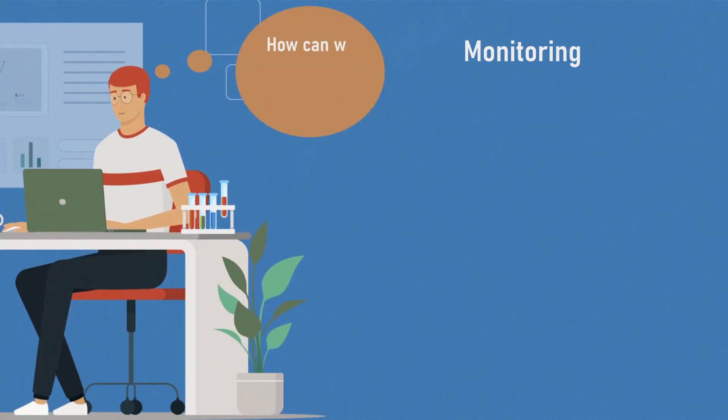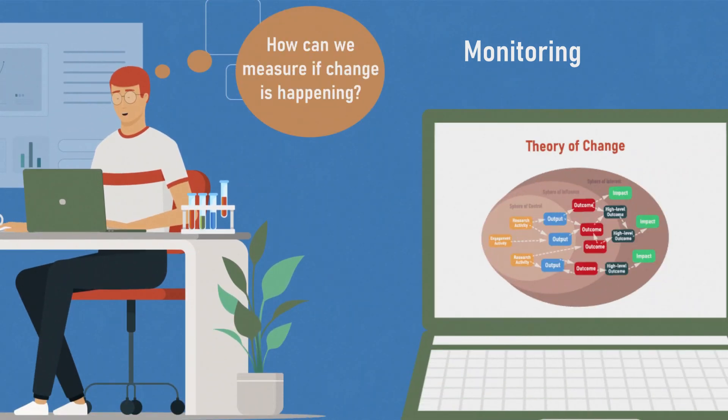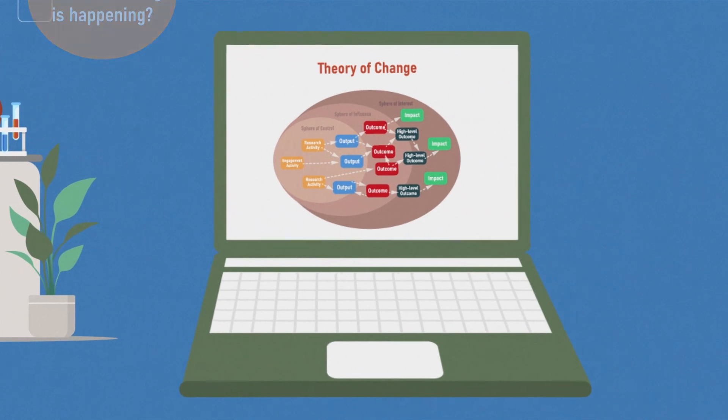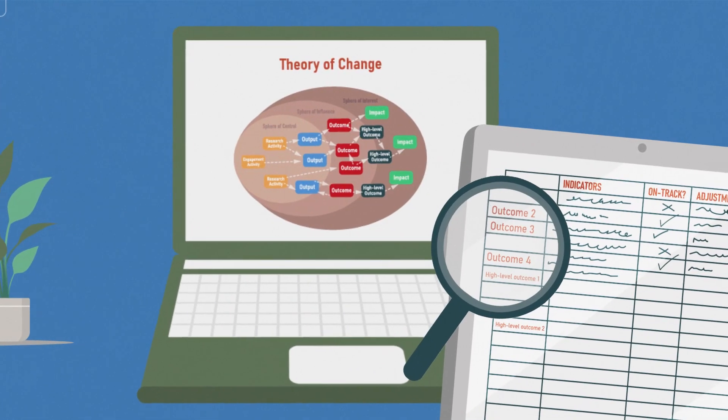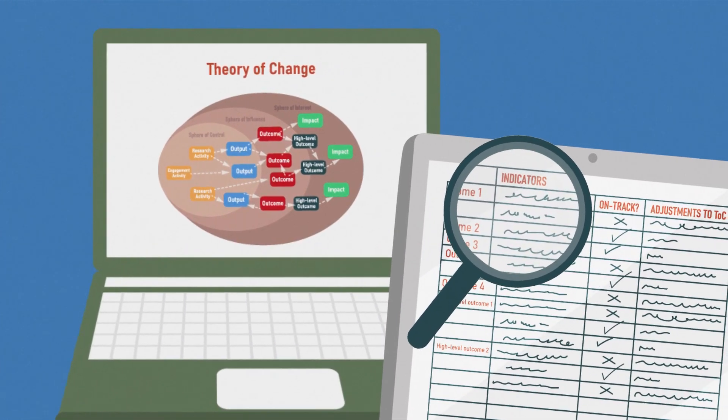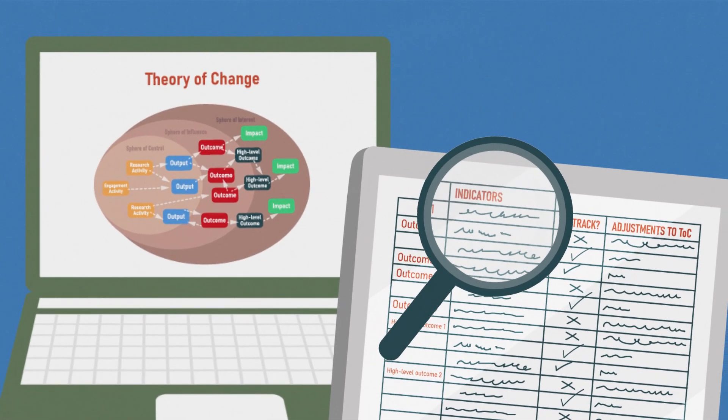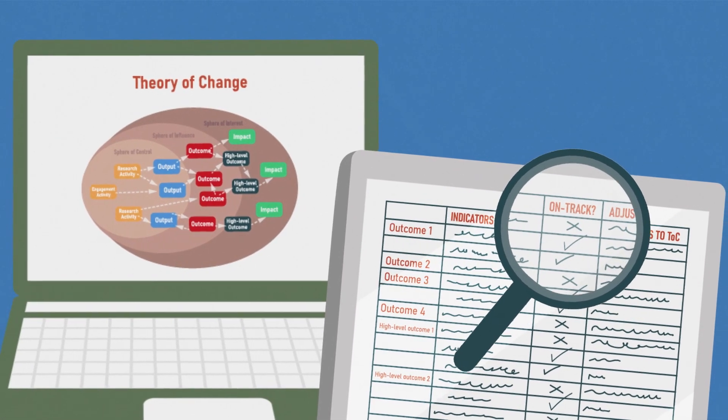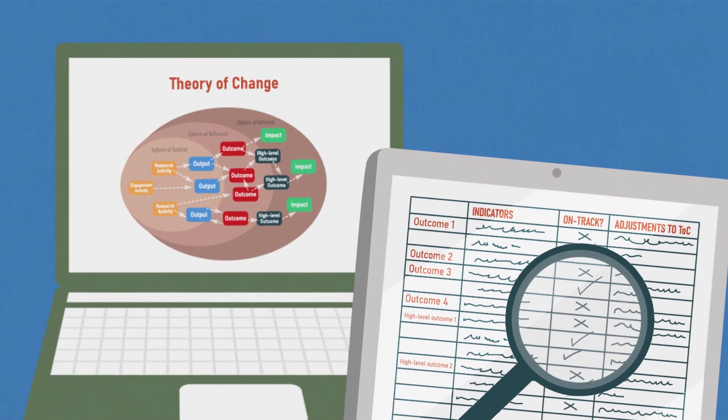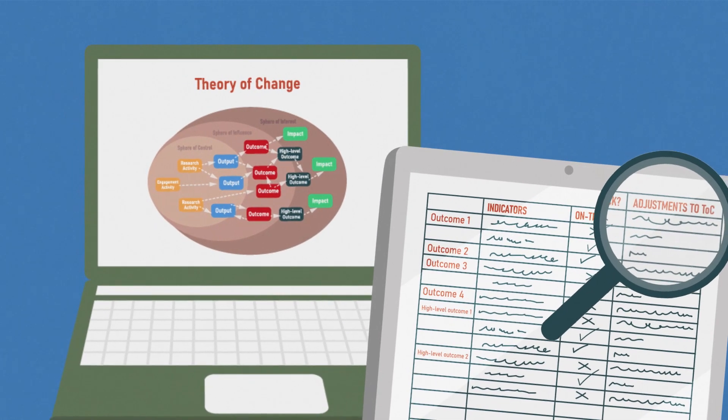During the research, you need to know if things are going as planned. With theory of change, you develop indicators that are tailored to your intended outcomes. By monitoring your progress against these, you can see what's on track and what's not working to adjust the design and implementation as needed.